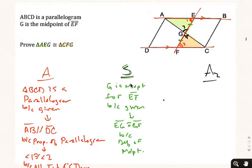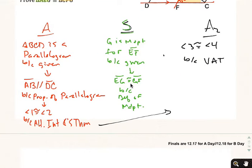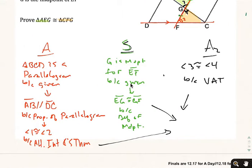Then our last bit is actually the easy one. Angle three is congruent to angle four, and that's going to be because of the vertical angle theorem. So I've met the conditions for angle-side-angle. I can now definitely claim that triangle AEG is congruent to triangle CFG by the angle-side-angle triangle congruency theorem.